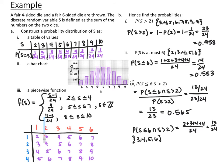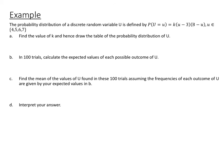These probability distributions — a table, a bar chart, and a piecewise function — all represent the same probability distribution, and we can use them to find probabilities. For the next example, a discrete random variable U is defined by P(U = u) = K(u − 3)(8 − u), where U = 4, 5, 6, or 7. We want to find the value of K.